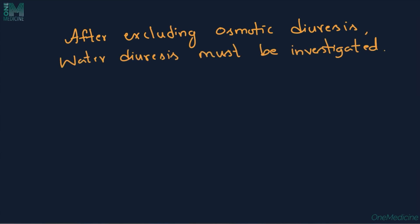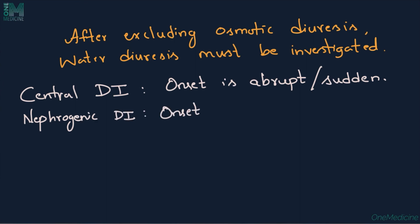In patients with central diabetes insipidus, the onset of symptoms is characteristically abrupt in nature, whereas patients with nephrogenic diabetes insipidus typically have a more gradual onset of symptoms.